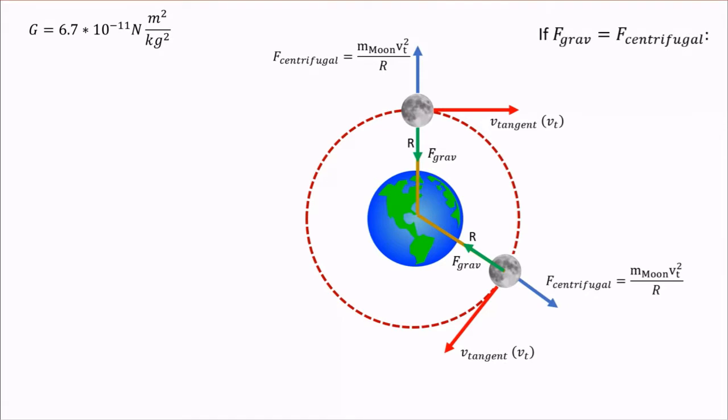If the gravitational force magnitude happens to exactly equal the magnitude of the centrifugal force, then there will be no change in the distance between the Earth and the moon. And we will therefore have a circular orbit.